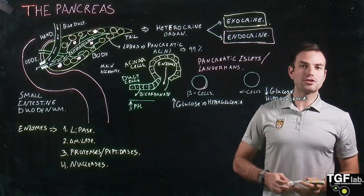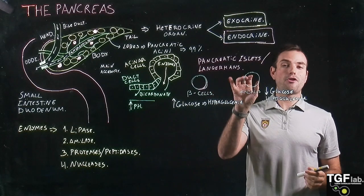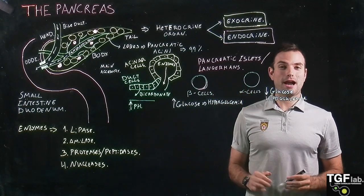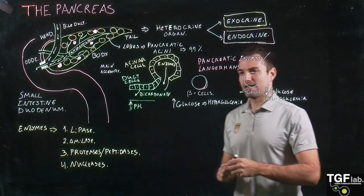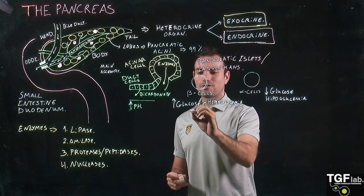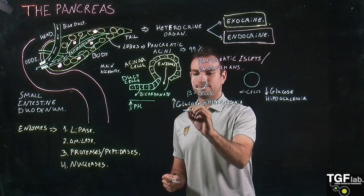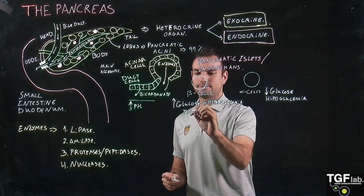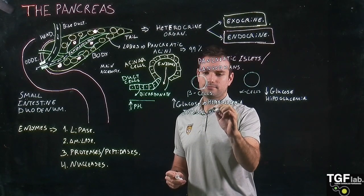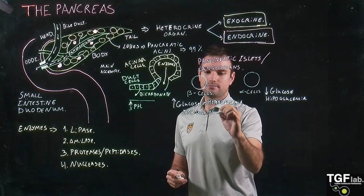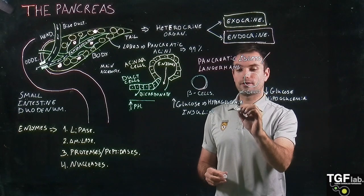They are going to secrete two different hormones that are really important for the metabolism of glucose. The beta cells are going to secrete insulin, and the alpha cells are going to secrete glucagon.